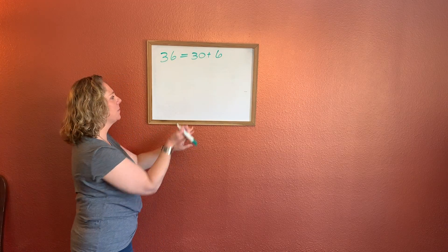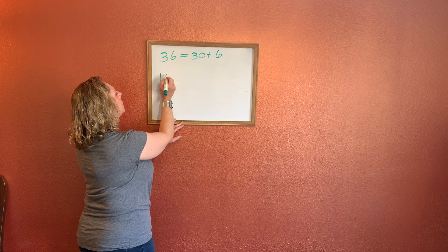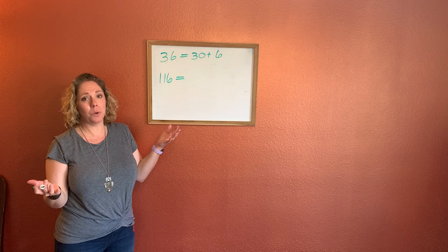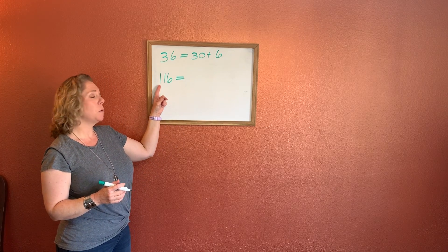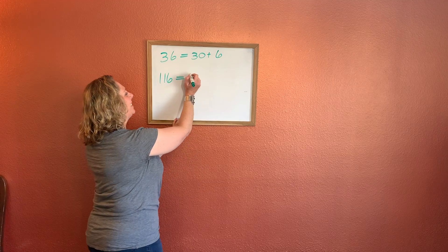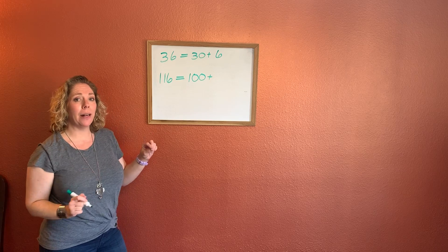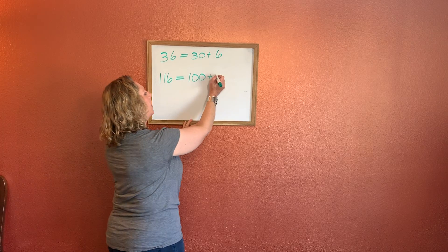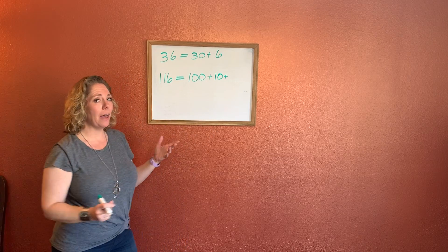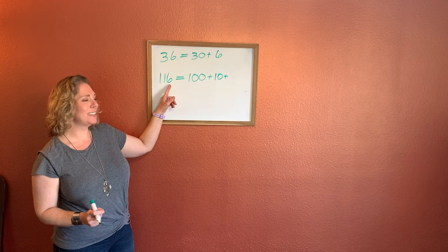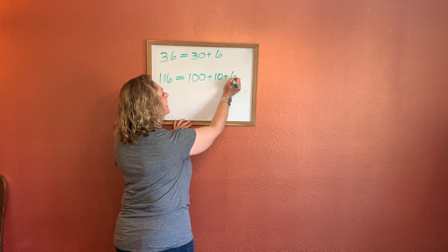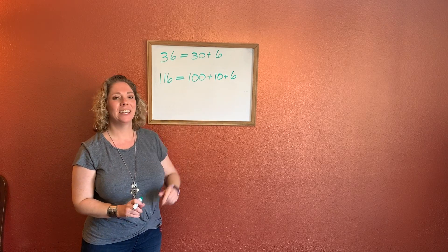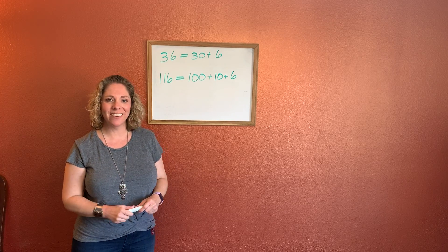Now let's try a three-digit number. Let's try 116. How would we write that in expanded form? We start with the value of our hundreds place — we have 100. So that is 100, plus the value of our tens place. Here's our tens place — we have 1 ten, so that is 10. Plus the value of our ones place. Here we have six ones, so the value of six ones is 6. The expanded form for 116 is 100 plus 10 plus 6. I know you guys are going to do a great job on today's work and I'll see you tomorrow.